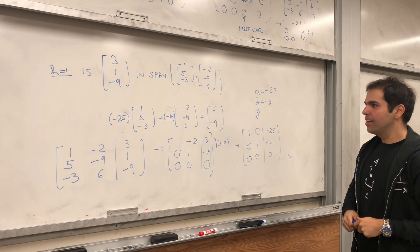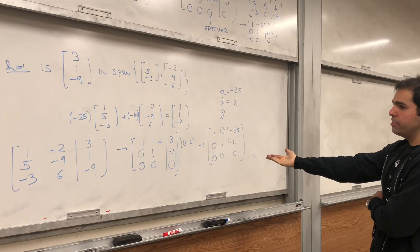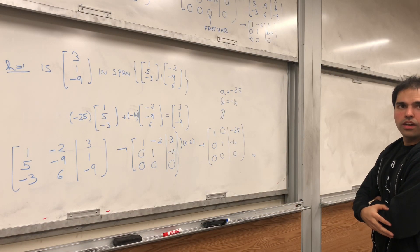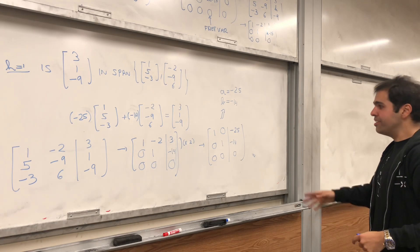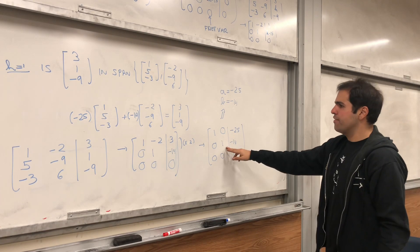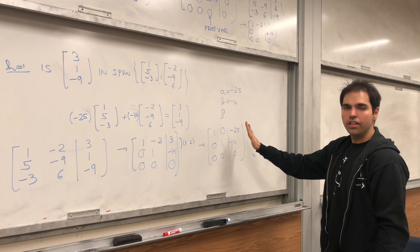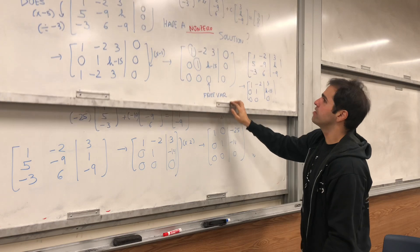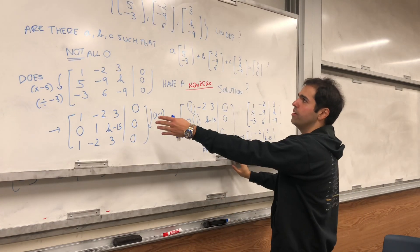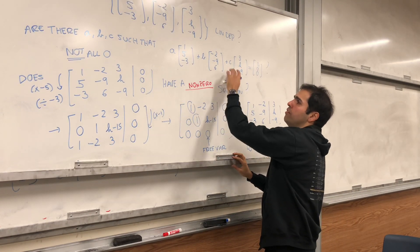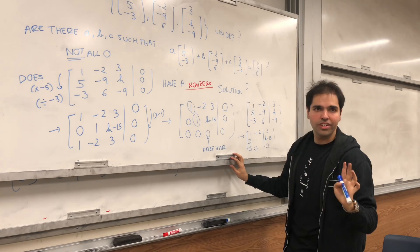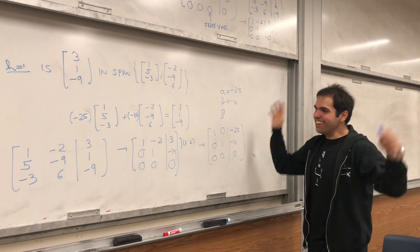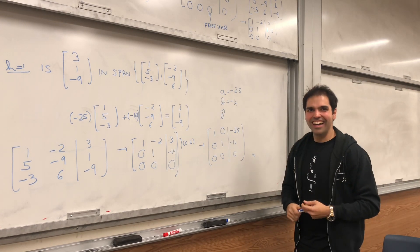And by the way, is that the only pair of A and B that will make this work? In this case, yes, because there are no free variables. Interestingly, here there are no free variables, so there's just a unique solution. But in general, in the previous thing, there was a free variable, so generally there are infinitely many solutions to this question. But interestingly here, there's just a unique solution. Alright, yeah.